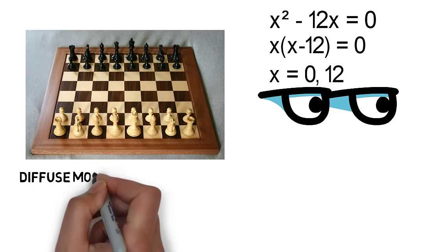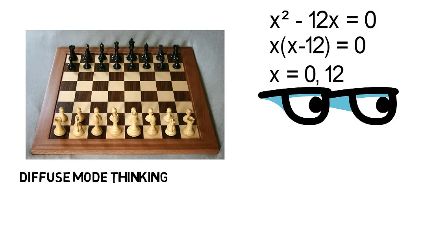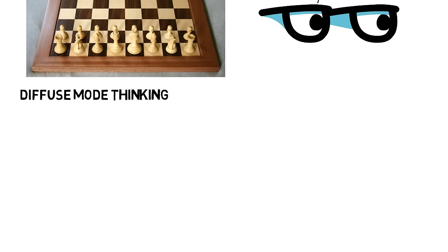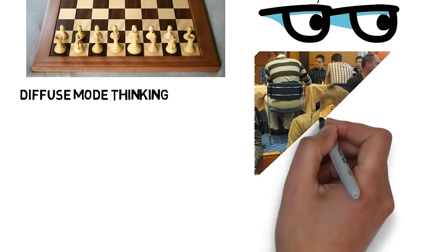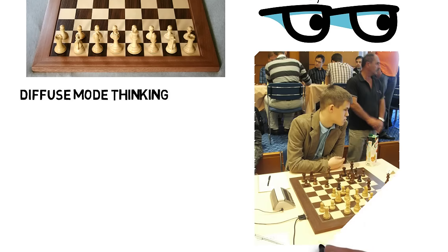And this is where Diffuse Mode Thinking comes in. It allows your brain to relax and the neurons to connect and kind of work in the background, which allows you to see more of the big picture. In the book, the author shows a picture of a chess grandmaster during a game who gets up from his seat and looks away from his game. He takes a short amount of time to distract himself and let his mind wander so he doesn't become stuck in a narrow way of thinking. And this is what Diffuse Mode Thinking really does.